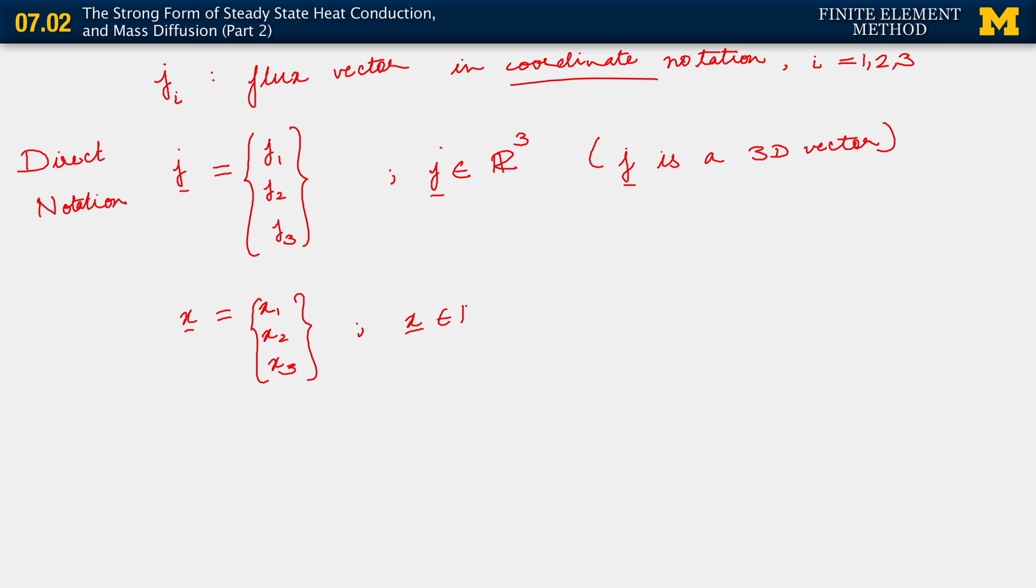You note that exactly the same thing can be said for x as well. Likewise, we have x equals x1, x2, x3 arranged together as a vector. And x belongs to R³, and this thing has more meaning because not only is x a three-dimensional vector, but x also is a point in three-dimensional space. So this has even more physical meaning.